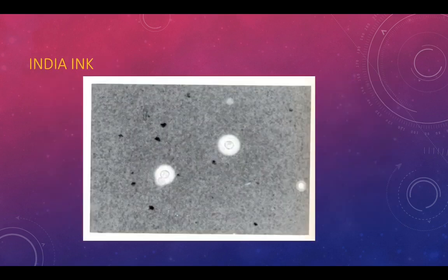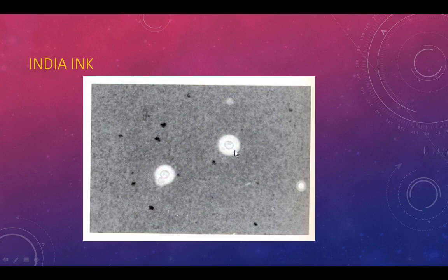India ink is used for visualization of capsules — particularly for Cryptococcus neoformans, a dangerous pathogen in CSF infections. India ink is a negative staining method: it stains the background black but leaves the fungus and its capsule unstained, so the capsule appears as a clear halo around the yeast cell. When budding, the halo covers both the parent and daughter yeast cell together.